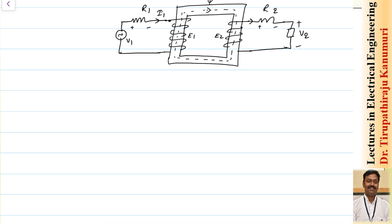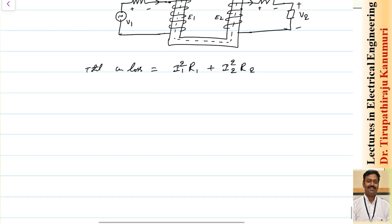There will be a power loss because of this resistance, dissipated in the form of heat. This is called copper loss - even though nowadays aluminum is sometimes used, it is still called copper loss. The total copper losses are: I1²R1 in the primary winding and I2²R2 in the secondary winding.